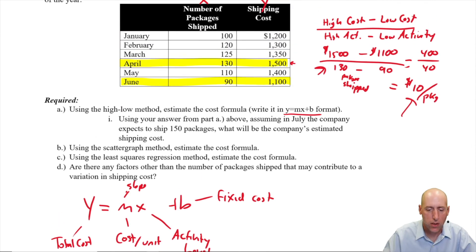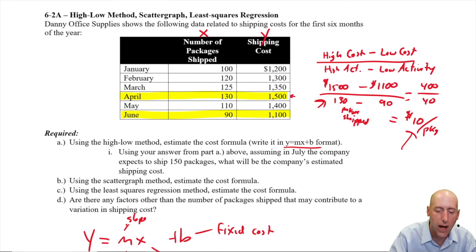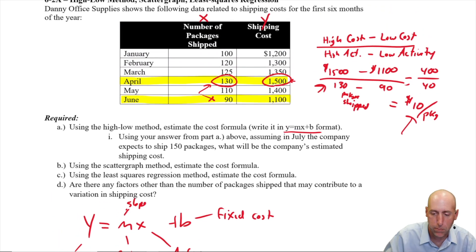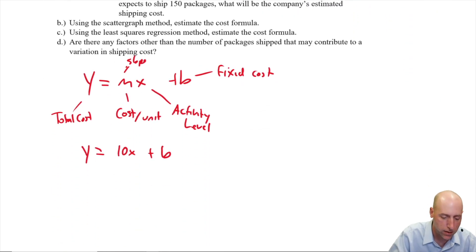Okay, so I want to figure out my b. And how I do it is, I plug in the numbers for x and y into my formula. Now I can use either April or June, I'll get the same answer, but I'll just use April for fun, randomly here. So my x was 130 and my y was 1500. So 1500 equals 10 times 130 plus b. 1500 equals 1300 plus b. And we can sort of take 1300 away from both sides. B equals 200.